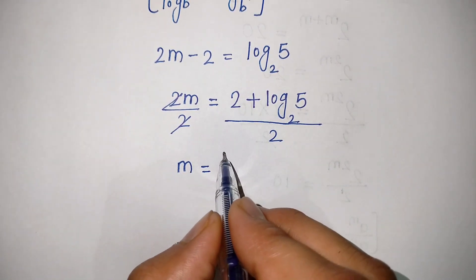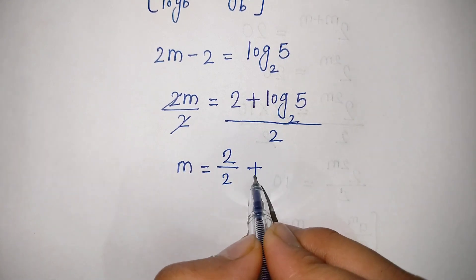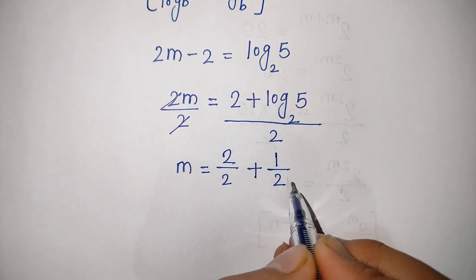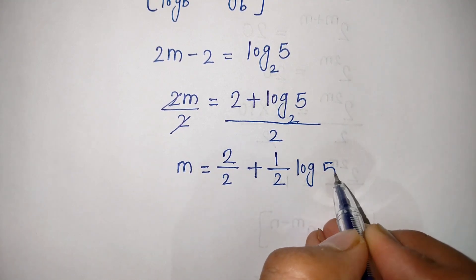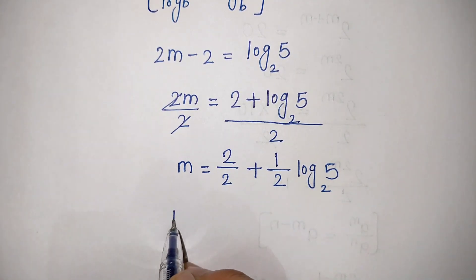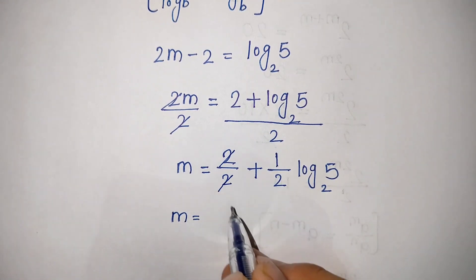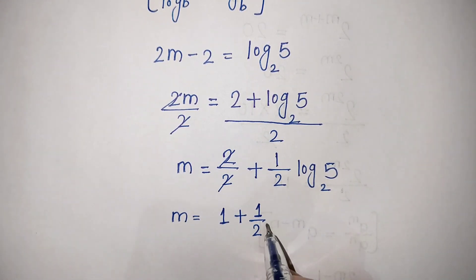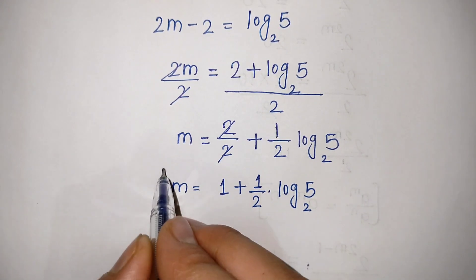This can be written as m is equal to 2 divided by 2 plus 1 over 2 times log of 5 base 2. So m is equal to 1 plus one-half times log base 2 of 5, and this is our final answer.